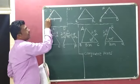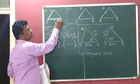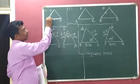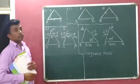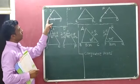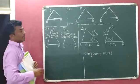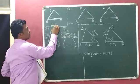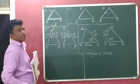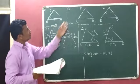This is side DE and this is side EF. So, angle E is included between the two sides DE and EF. The final answer is angle E.